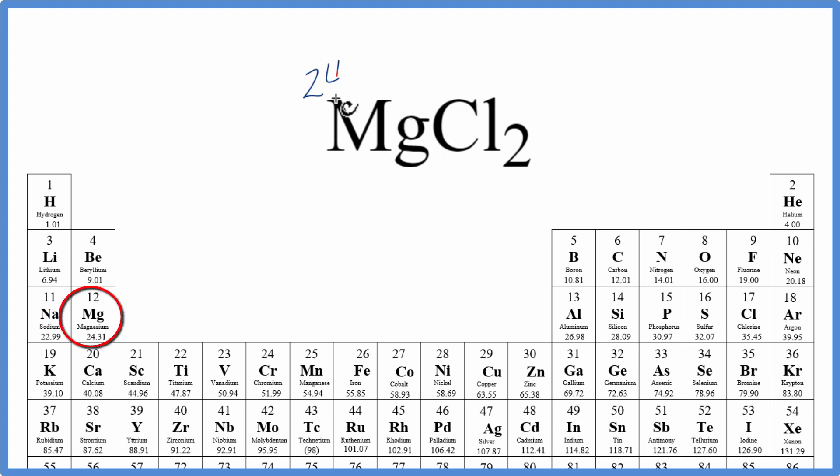Magnesium, that's 24.31 grams per mole, and I won't write grams per mole until the end. And then chlorine is 35.45 grams per mole.